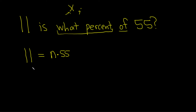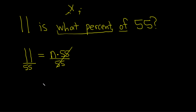So now we just have to solve for n. The n is being multiplied by 55. To get rid of it, we have to do the inverse operation of multiplication, which is division. So you write a line here and put a 55 here. What you do to one side, you do to the other — so you put a 55 here. They cancel because they're the same, so you have 11 over 55.